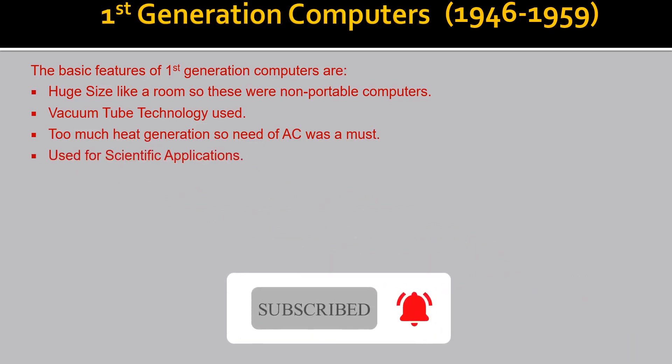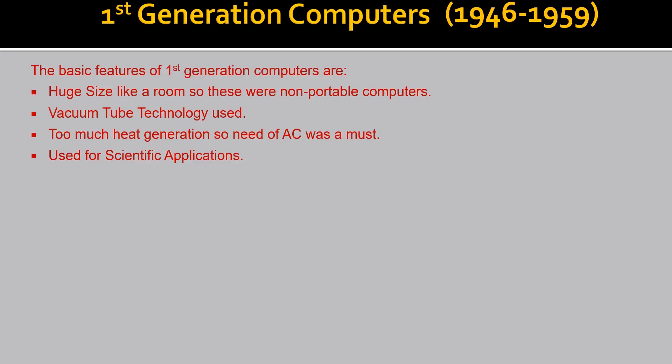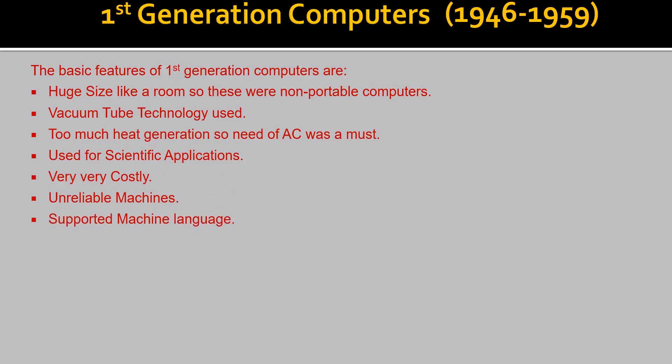These computers were used for scientific purposes. Common people couldn't use them because they were very, very costly. These were unreliable machines. They supported machine language — a language easily understandable by the computer, but very difficult to understand for a user. Machine language is in the form of 0s and 1s.